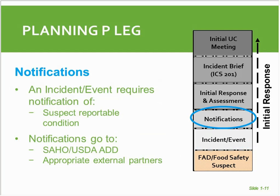Moving up the leg of the P, we're now at notifications. At this stage, where we have a preliminary positive and no national lab confirmation, we want to make notifications on a need-to-know basis. We make plenty of notifications, but notification begins at this stage and doesn't end here — it's an ongoing activity during the initial response phase. Prior to national lab confirmation, notifications are made on a need-to-know basis to keep them discreet. We don't want to cause trade bans on a false alarm, and we advise the owners of the animals to also be discreet until we can confirm.